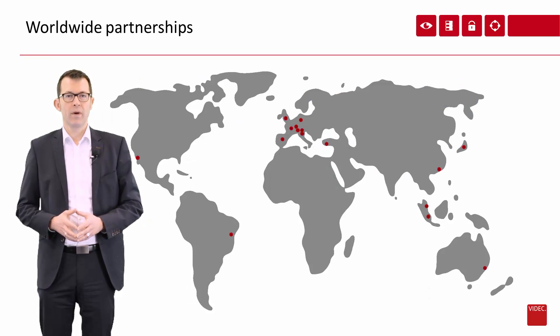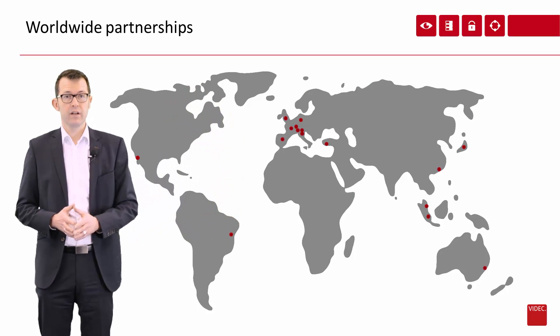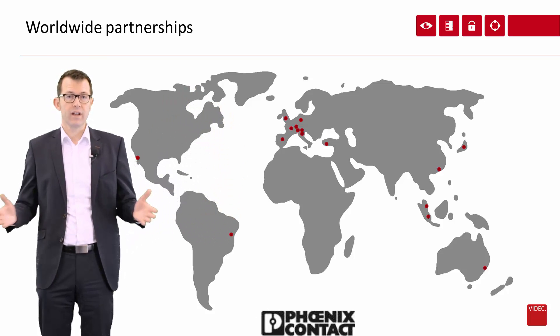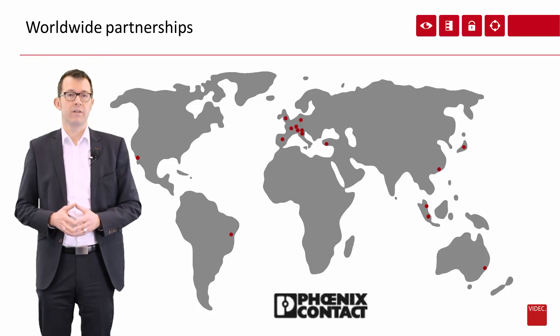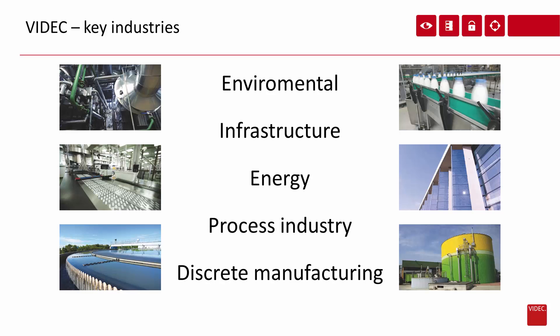WDEC has a well-prepared worldwide partner network. As you can see, we are active in nearly every region in the world. And together with our global OEM partner Phoenix Contact, we address more than 80 countries. With our products, we are active in different industries. We have grown up in the environmental industry with the growth of the water and wastewater business in Germany. Together with the infrastructure industry in buildings, tunnel applications and energy distribution, we are today also quite successful in the energy industry in common.